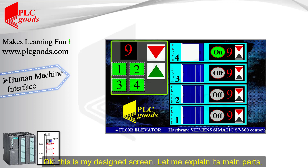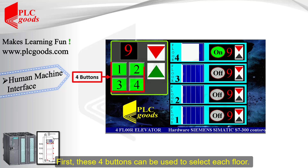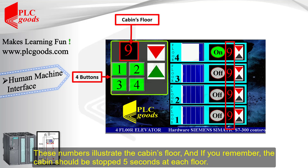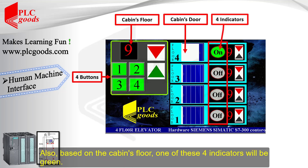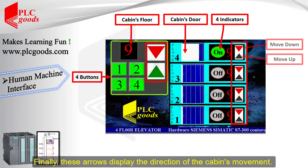Okay, this is my design screen. Let me explain its main parts. These four buttons can be used to select each floor. These numbers illustrate the cabin's floor, and if you remember, the cabin should be stopped five seconds at each floor — during this time the related door will be open on the HMI screen. Also, based on the cabin's floor, one of these four indicators will be green. Finally, these arrows display the direction of the cabin's movement.